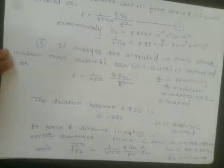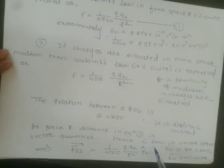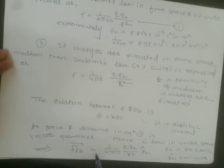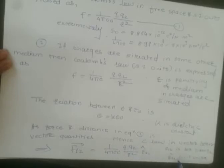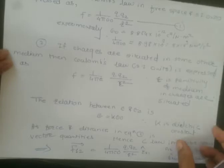Since force and distance in the equation are vector quantities, Coulomb's law in vector form can be expressed as: F₁₂ = (1/4πε₀) · q1·q2 / r² · r̂₂₁, where r̂₂₁ is a unit vector.